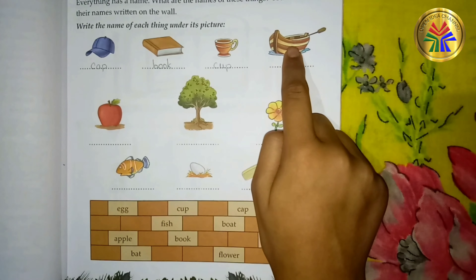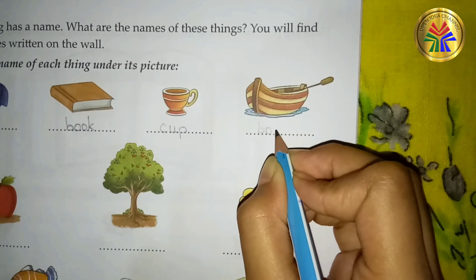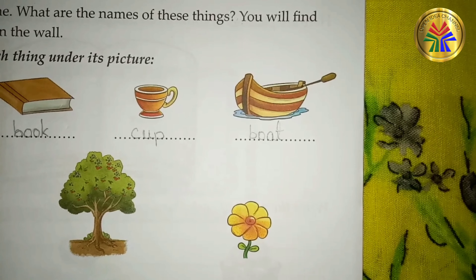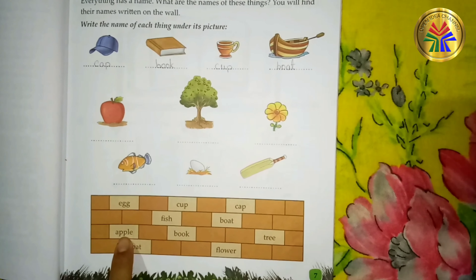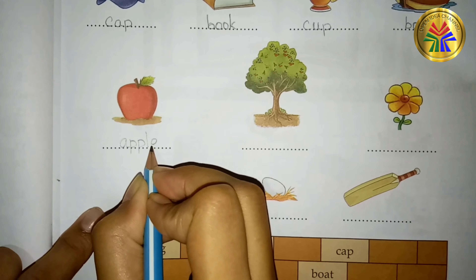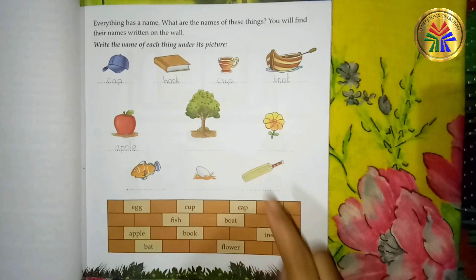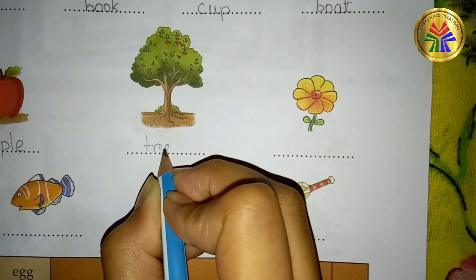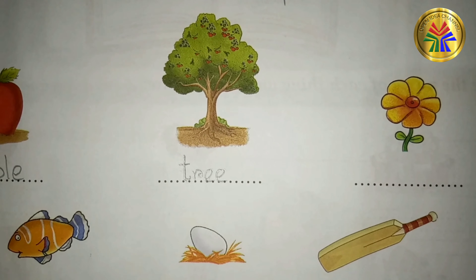Now write the name of each thing under each picture. This one is cap — C, A, P — cap. This is book — B, double O, K — book. This is cup — C, U, P — cup.